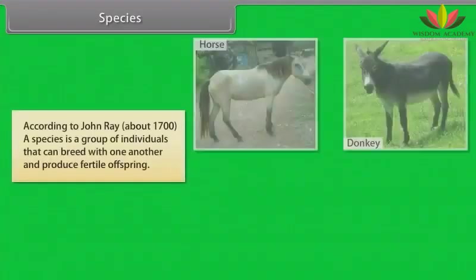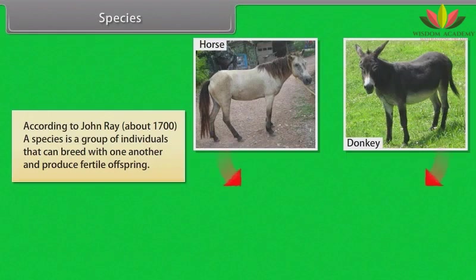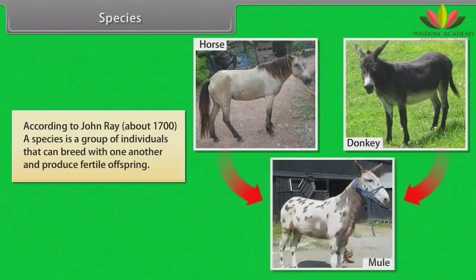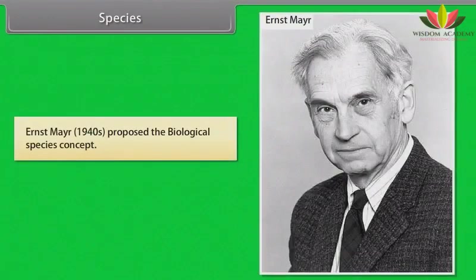Species: According to John Ray, around 1700, a species is a group of individuals that can breed with one another and produce fertile offspring. Ernst Mayr proposed the biological species concept.